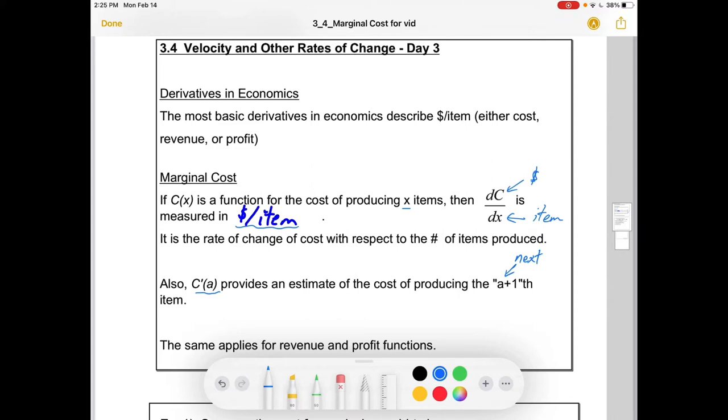Now, C prime of A also provides an estimate for the cost of producing the next item. So we can use the Leibniz notation of dC/dX, or we can say C prime. But typically we get this nice estimate of what the next item is going to cost to produce. The same for all this stuff applies to revenue and profit functions, and profit is essentially revenue minus cost.